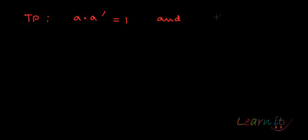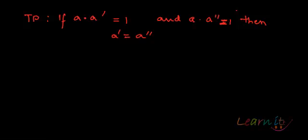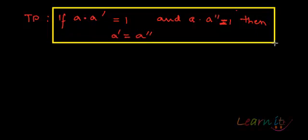Now, what about multiplication? We again consider two inverses. We have to prove that a dot a prime equals 1 (the neutral element) and a dot a double prime equals 1. If both are inverses, then they must be equal to each other — that is, a prime must equal a double prime. That is our target.